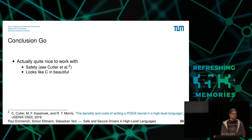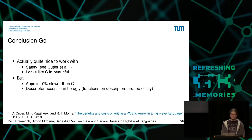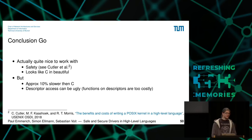As a conclusion on Go: I found it quite nice to work with. Safety properties have improved — Cutler et al. wrote a kernel in Go and it is safe. It looks like C code. But it has downsides: in the best case it's approximately 10% slower than C, and in more suboptimal cases even worse. Descriptor access can be a bit ugly. Next, I'll hand over to Simon who did this in Rust.